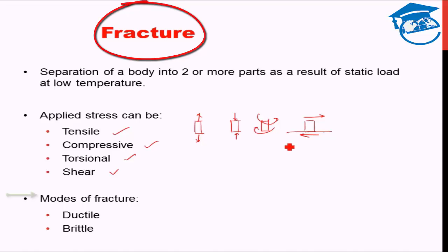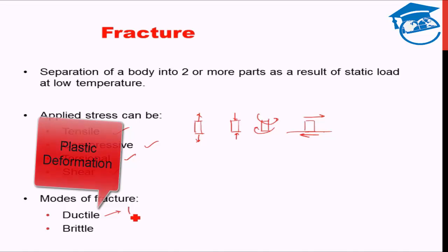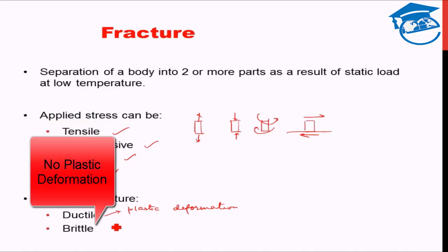The modes of fracture are two: one is ductile fracture, and the second is known as brittle fracture. Ductile fracture has plastic deformation associated with it, whereas brittle fracture has no or very little plastic deformation.